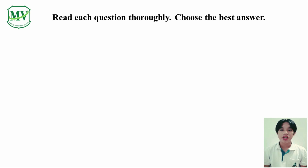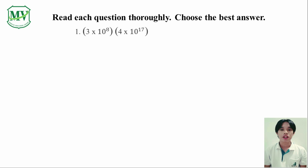Read each question thoroughly and choose the best answer. Number 1: 3 times 10 raised to the power of 8 multiplied by 4 times 10 raised to the power of 17.